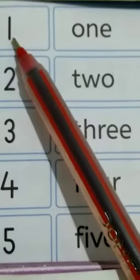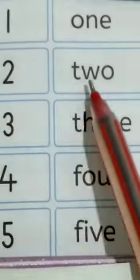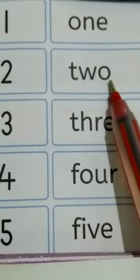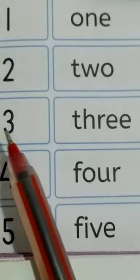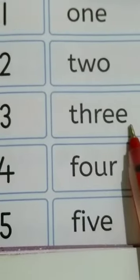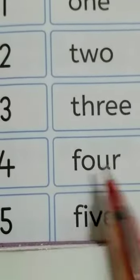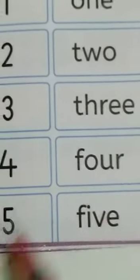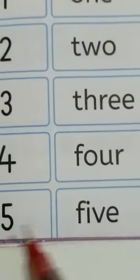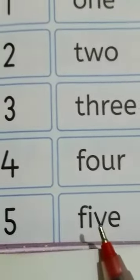1, O-N-E, one. 2, T-W-O, two. 3, T-H-R-E, three. 4, F-O-U-R, four. 5, F-I-V-E, five. Okay.